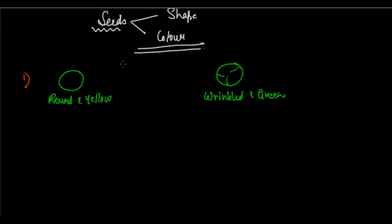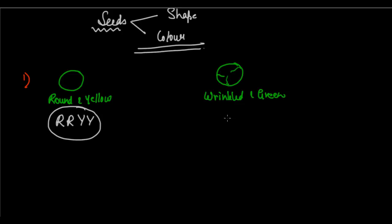They were all homozygous. We are always going to consider the first cross as homozygous — the P generation will always have homozygous parents. So round and yellow had the genotype capital R capital R capital Y capital Y. Please remember that round is dominant and yellow is dominant in terms of color; wrinkled is recessive in shape and green is recessive in color. The phenotype was round and yellow. For the wrinkled and green seed, the genotype was small r small r small y small y.